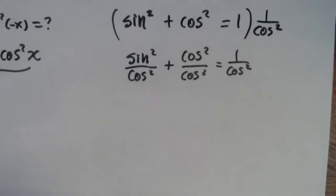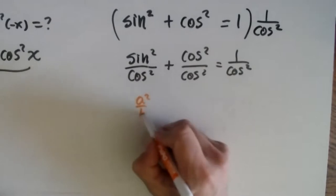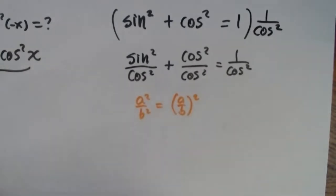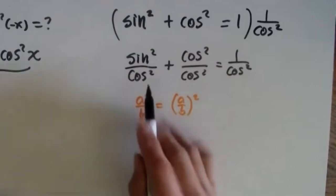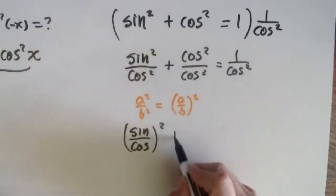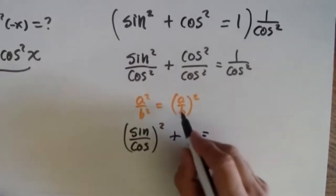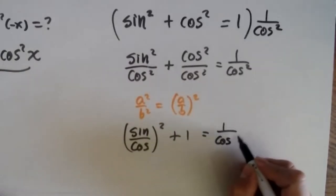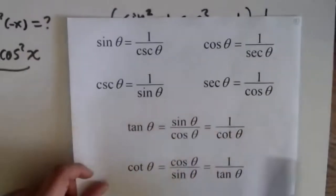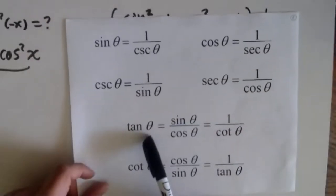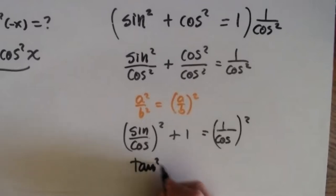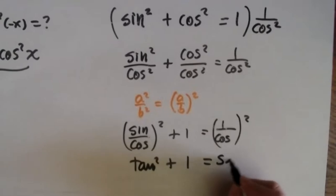Now I have to remember my algebra. My algebra says you have a squared over b squared — this is (a over b) squared; you can factor the power. So this is (sine over cosine) squared plus one over cosine, everything squared. Sine over cosine is tangent, and one over cosine is secant. So I have tangent squared plus one equals secant squared.